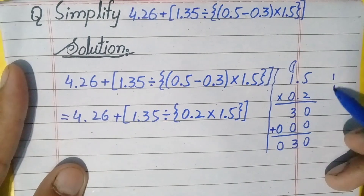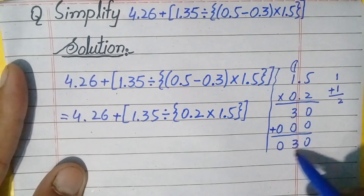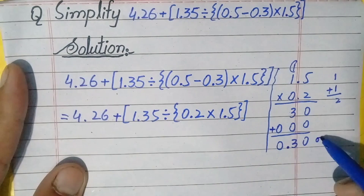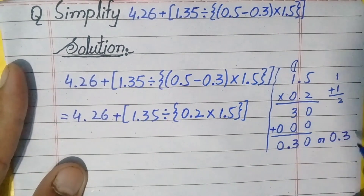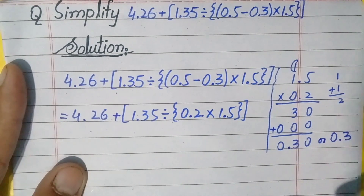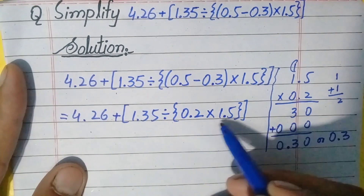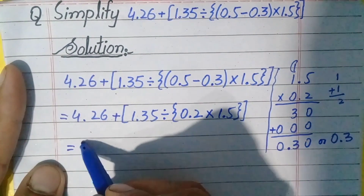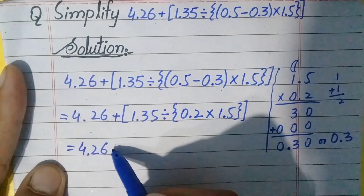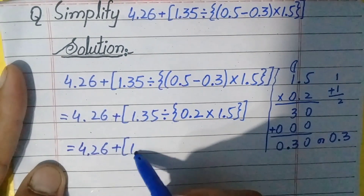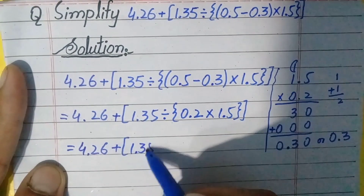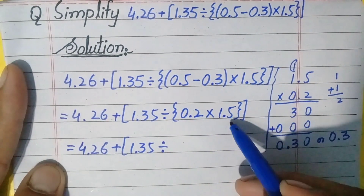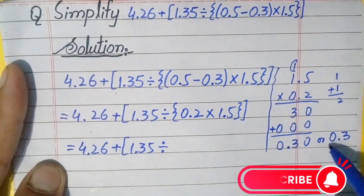Now, in this number the decimal part has one digit; similarly, this number also has one digit in the decimal part. So 1 plus 1 is 2, meaning there will be two digits in the decimal part of the answer. We put the point accordingly, giving 0.30, which can also be written as 0.3. So we write 0.3 instead of the numbers inside the braces. The remaining question is: 4.26 plus, square brackets open, 1.35 divide 0.3, square brackets close.